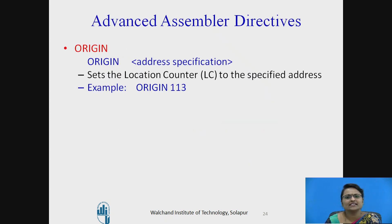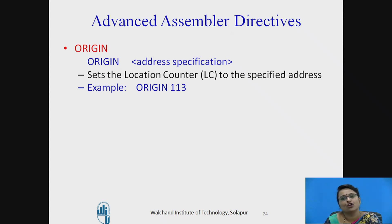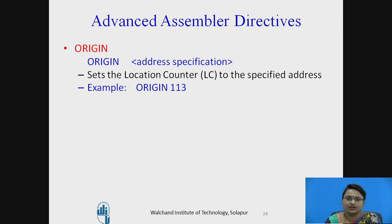Now let us see some advanced assembler directives. One is ORIGIN, which changes the location counter value — it sets the location counter to a specified address. Usually a program executes normally, but if we want to change the location counter value we use ORIGIN. For example, 'ORIGIN 113' sets the location counter directly to address 113.